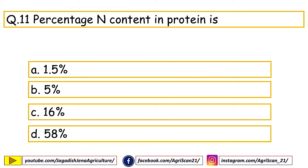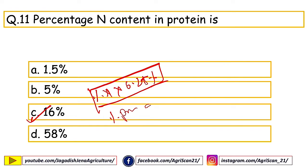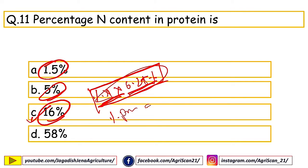Next question: what is the percentage nitrogen content in protein? Options are 1.5%, 5%, 16%, 58%. The right answer is 16%. This is why we multiply percentage nitrogen by a factor to get crude protein content. In cereal biomass, nitrogen is around 1–1.5%, while in pulses and legumes it is around 3–5%.